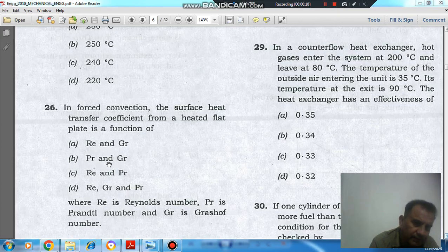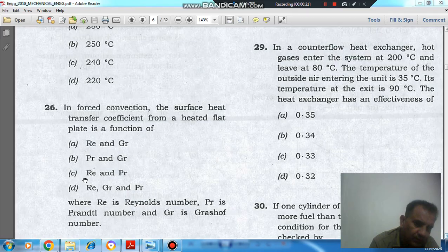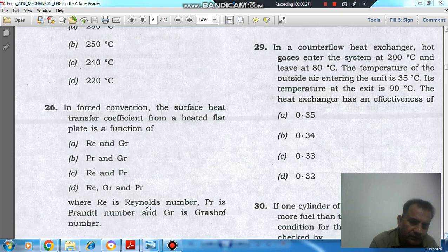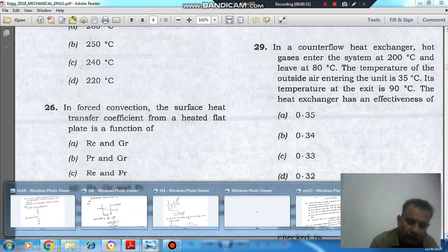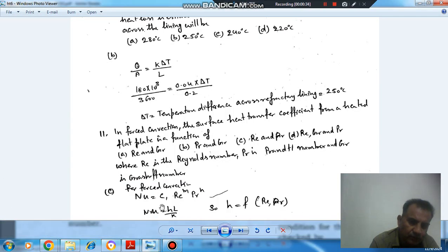Option B - Pr and Gr; Option C - Re and Pr; Option D - Re, Gr, and Pr. Where Re is Reynolds number, Pr is Prandtl number, and Gr is Grashof number. So in forced convection we have Nusselt number